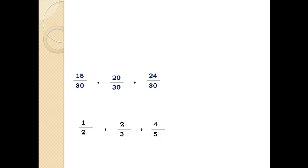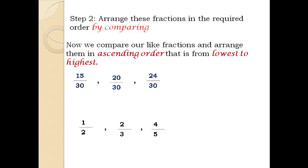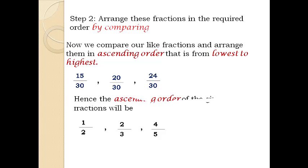Step 2: arrange the fractions in the required order by comparing. For ascending order (lowest to highest), the like fractions are arranged as: 15 over 30, 20 over 30, 24 over 30. Hence the ascending order of the given fractions is: 1 over 2, 2 over 3, 4 over 5.